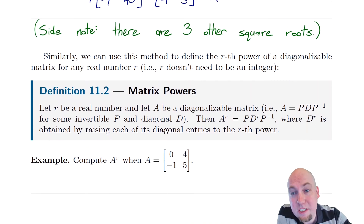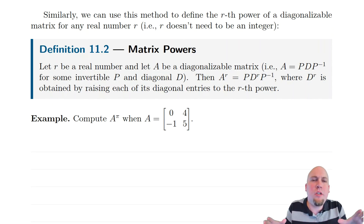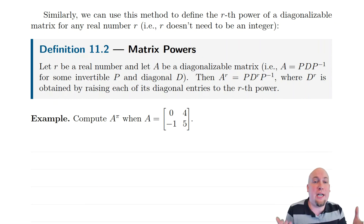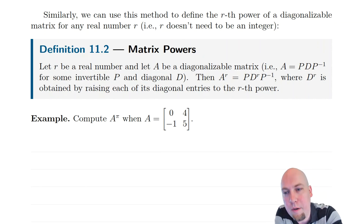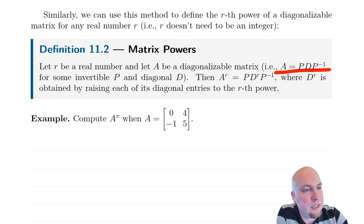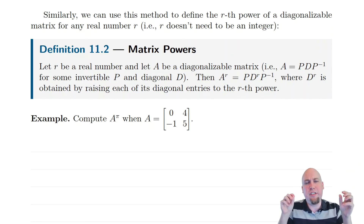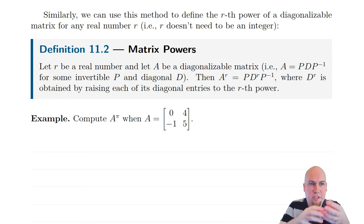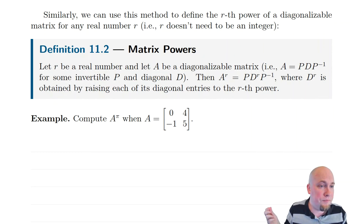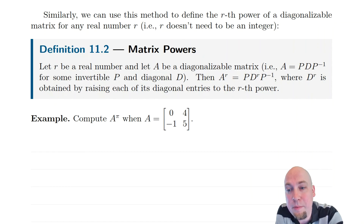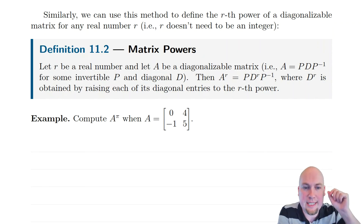In the previous example we were taking the power one-half of a matrix, but there's no reason to restrict to integers or one-half — you can use any real power with this exact same procedure. So we define: for any real number R and any diagonalizable matrix A = PDP inverse, A to the power R is defined as P D^R P inverse, where D^R is computed by raising each diagonal entry to the power R. This is a valid definition because it coincides with the existing definition when R is a positive integer. Let's compute A to the power π for our same matrix A.